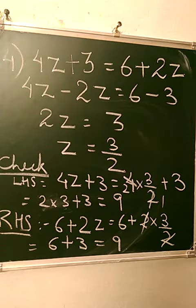Here is the fourth question, where the value of z is 3/2. We substitute the value of z in LHS and RHS, and we see that LHS equals RHS. This completes the fourth question of the homework.